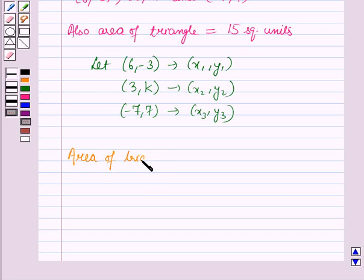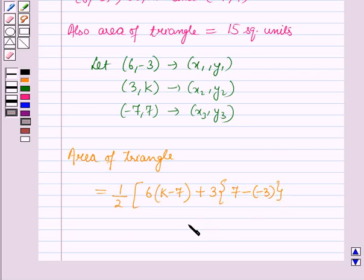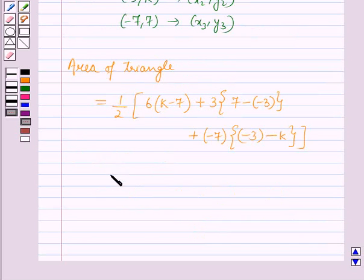...½ times 6 times (k-7) plus 3 times 7 minus (-3) plus (-7) times (-3 minus k), which is further equal to ½ times [6k minus 42 plus 21 plus 9 plus 21 plus 7k].